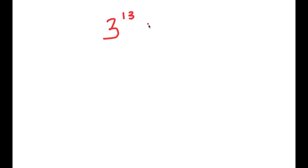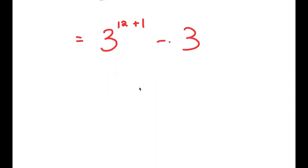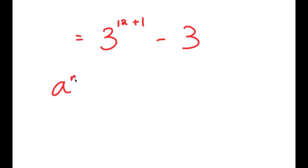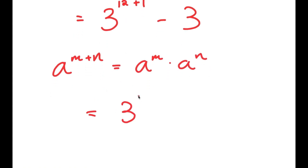In this video I'm going to solve the problem 3 to the power of 13 minus 3. To solve this, I'll start by rewriting 3^13 as 3^(12+1) minus 3. Using the property a^(m+n) = a^m × a^n, I get 3^12 times 3^1 minus 3.